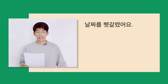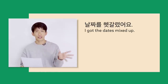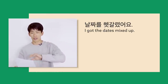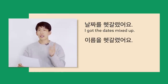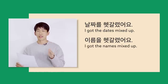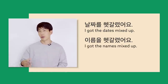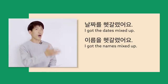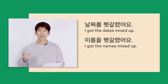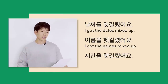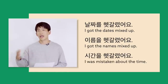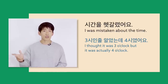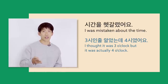Some examples: 날짜를 헷갈렸어요 — I got the dates mixed up. I thought it was the 20th, but it was actually the 19th. And 이름을 헷갈렸어요 — I got the names mixed up, I was mistaken about somebody's name. Her name is 경은, but I called her 경화. And lastly, 시간을 헷갈렸어요 — I was mistaken about the time. 세 시인 줄 알았는데 네 시였어요. I thought it was three o'clock, but it was actually four o'clock.